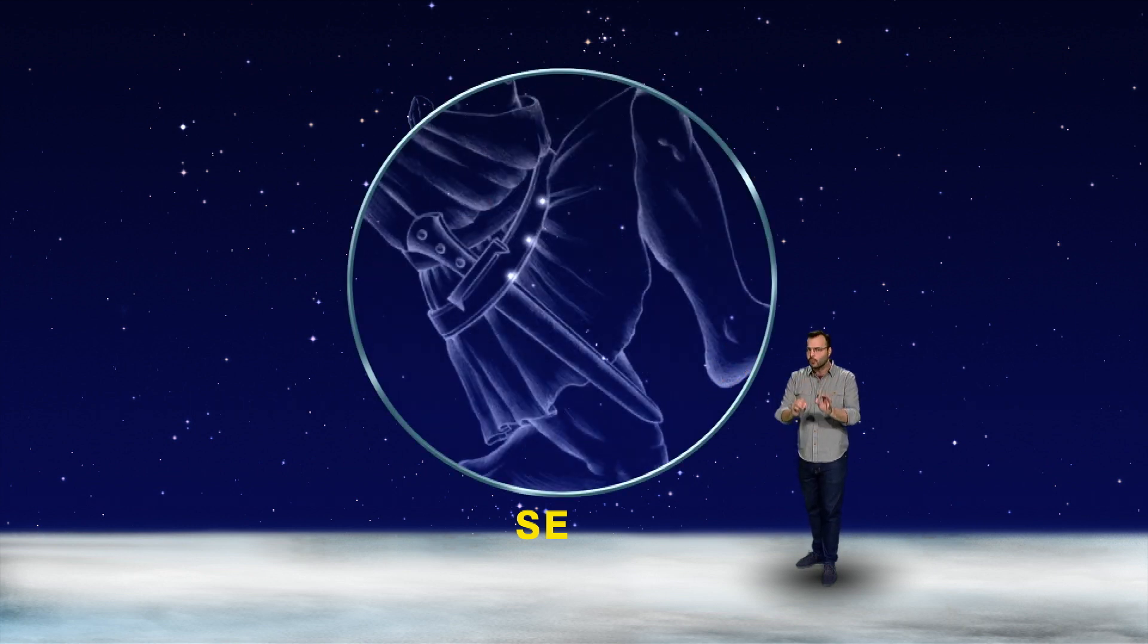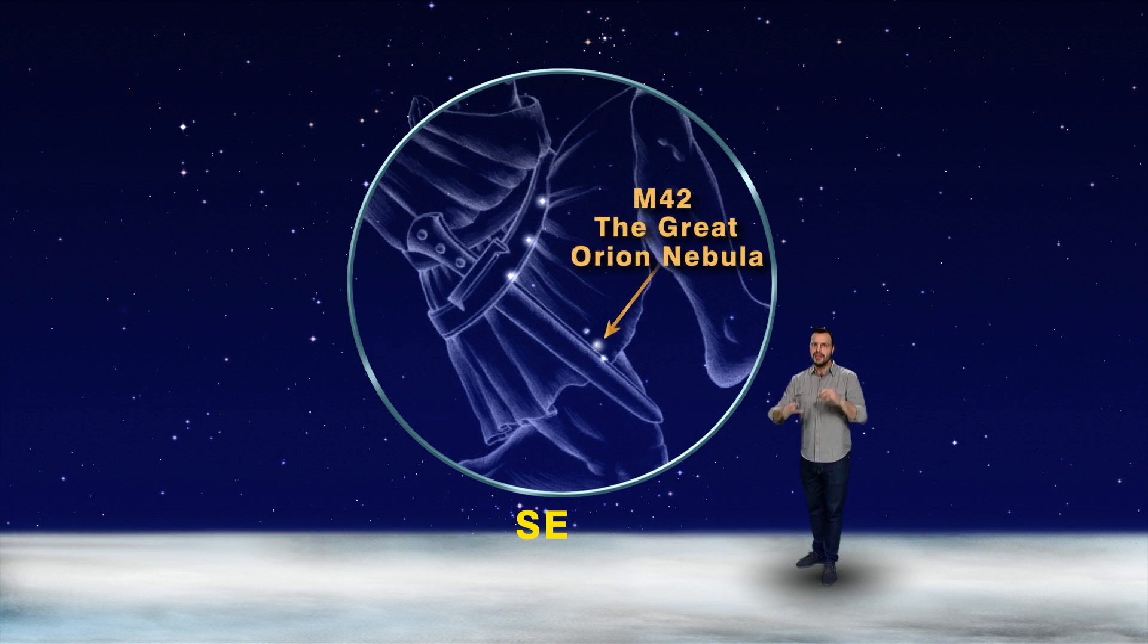But have you ever looked at Orion for a while and noticed these three much dimmer stars that form the sword of Orion? Because right there, that is the Orion Nebula, a great cosmic cloud where new stars are born.